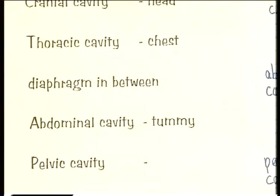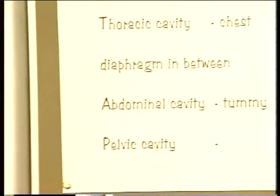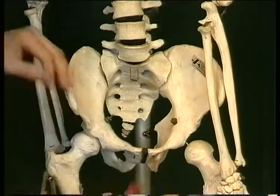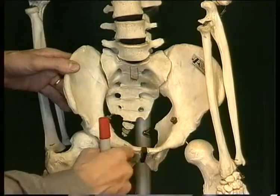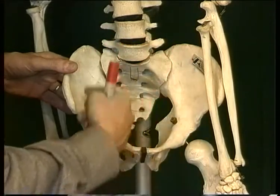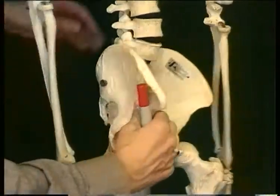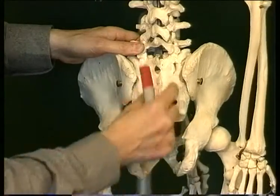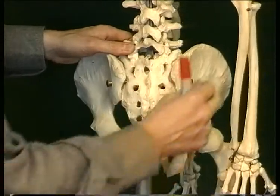And then finally, at the bottom of the trunk — the middle part of the body — the pelvic cavity. The pelvic cavity is this area inside the pelvis; this is the pelvis, this bone here, and the pubic bones at the front. The pelvic organs are located inside the pelvic cavity. And to the back we have the coccyx at the bottom and the sacral vertebrae, to the back of the pelvic cavity.